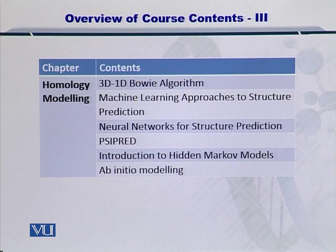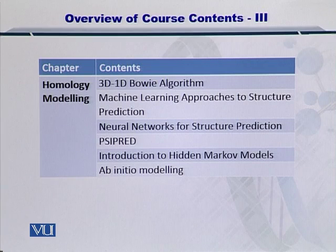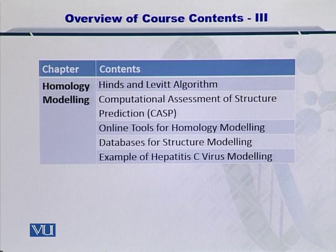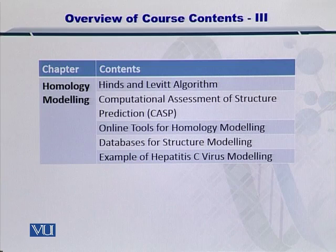Specifically, neural networks will be evaluated. The Cypred tool will be introduced, and we'll also touch on hidden Markov models. This will be followed by Ab initio modeling. The Heinz and Leavitt algorithm will be used, and the Computational Assessment of Structure Prediction, or CASP, will be introduced to evaluate the quality of structure prediction.